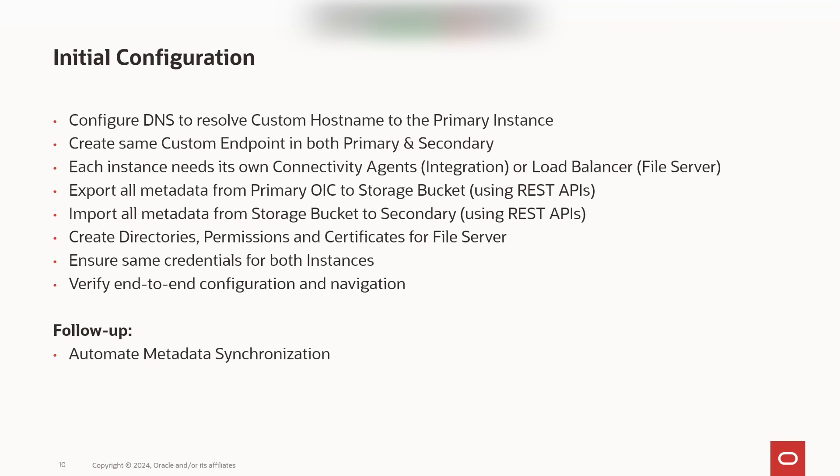On the secondary side, import all metadata from the storage bucket into the OIC instance using similar REST APIs. For the file server, create directories, users, permissions, and certificates on both sides similarly, and ensure the same credentials are used for both instances. As a last step, verify everything is working correctly.